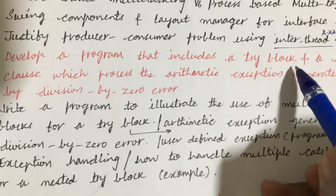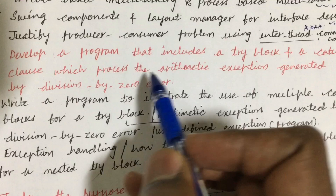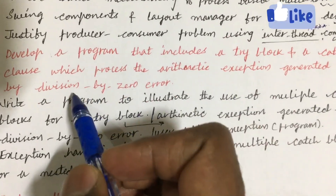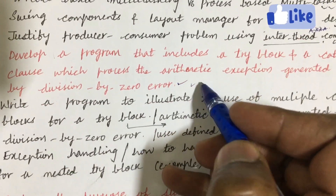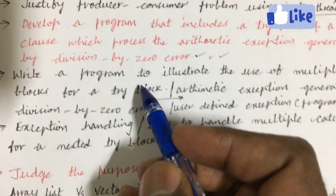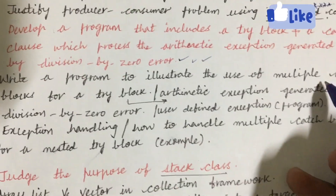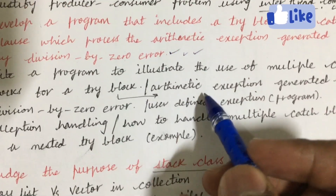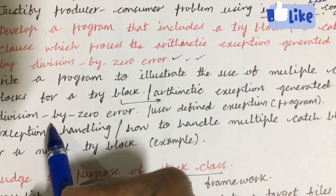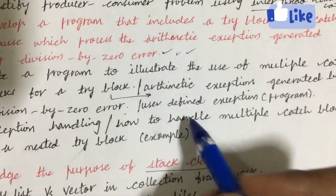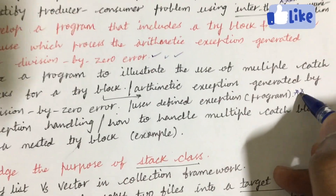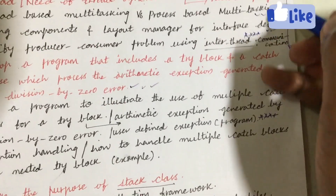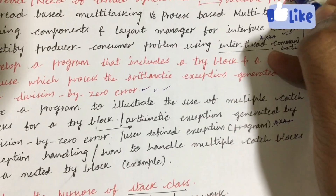Develop a program that includes a try block and a catch clause which processes the arithmetic exception generated by division by zero error. Write a program to illustrate the use of multiple catch blocks for a try block, handling arithmetic exception from division by zero and user-defined exception. From this part we can expect one question — 5A as well as 5B.